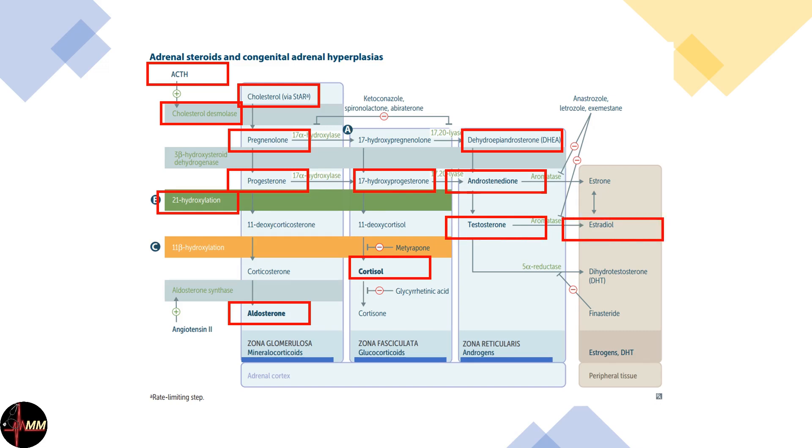Congenital adrenal hyperplasias result from enzyme deficiencies in these pathways. The most common is 21-hydroxylase deficiency, leading to an accumulation of 17-hydroxyprogesterone and an overproduction of androgens.